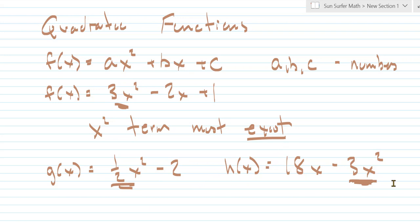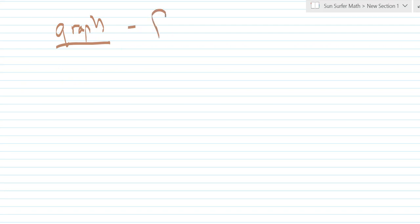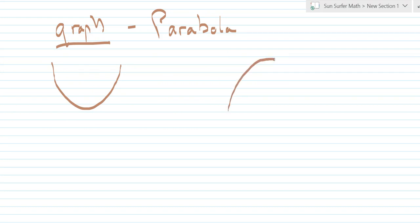The first thing is to be able to recognize a quadratic function when you see it. The second thing is to understand the graph of a quadratic function. The graph of a quadratic function is going to be a parabola — either an upturning parabola or a downturning parabola.